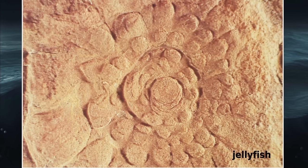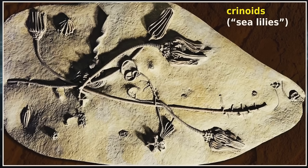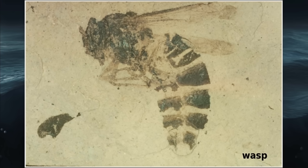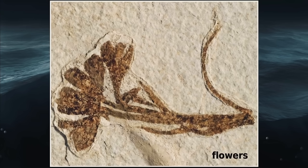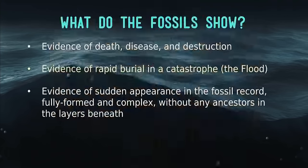Here's a fossilized jellyfish — jellyfish are soft, they melt in the sun or get ripped apart by wind and waves. Look at these crinoids — their heads are delicate, yet they've been preserved. Or the wings of this wasp — how do you fossilize a wasp like that if it's not rapidly and catastrophically buried? Or flowers — soft organisms that would wither and fall apart. To preserve these organisms you need rapid, catastrophic deposition on a mass scale. The fossils show evidence of rapid burial in a catastrophe: the flood.